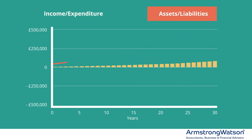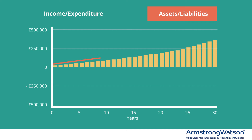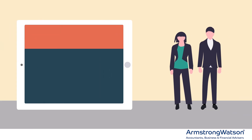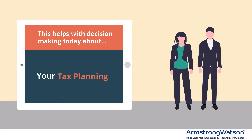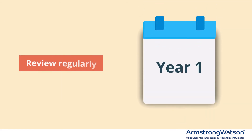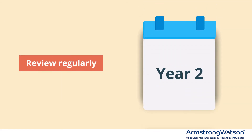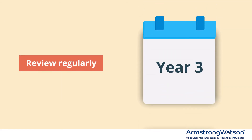From there, you can build a long-term income and expenditure forecast. This will help you make smart decisions about what you need to do at each stage to ensure you hit your target amounts. This approach provides valuable insight into how to structure your investments, your risk profile, your tax requirements, and so on. Once you put your plan into place, this can then be supported by regular reviews year by year to keep the plan on track.